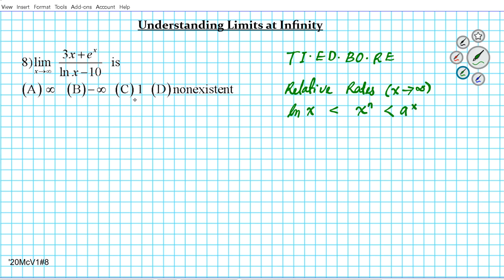We're comparing these because that's what we have here. The logarithm is the slowest growing as you tend towards infinity, all the way to your fastest — the exponential. This is the relative growth rates for comparing how fast logarithmic, power, and exponential functions grow as x tends towards infinity.